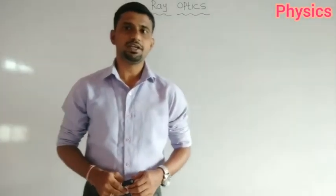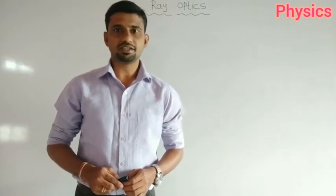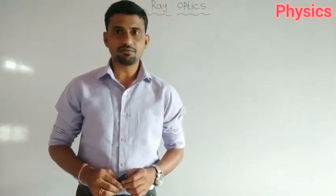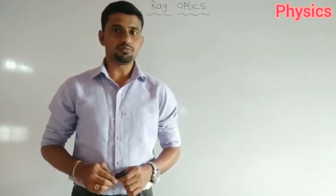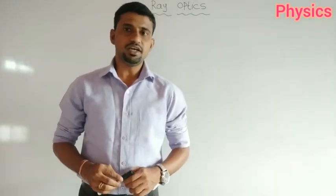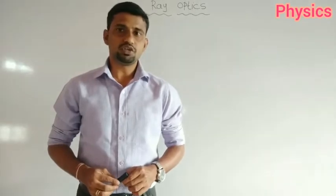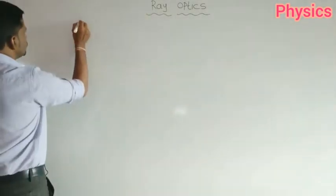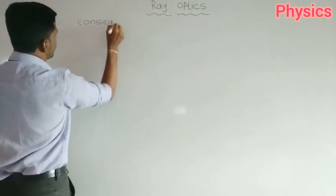Hello dear friends. In the previous video we learned about the refraction of light. We know that refraction of light is the phenomenon of bending of light when a ray of light is incident from one medium to another medium. In our daily life we observe the phenomenon of refraction of light. Now we will discuss some of the consequences which take place due to the refraction of light.